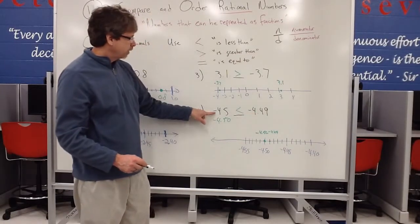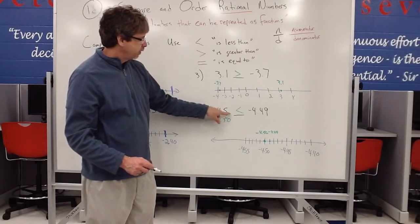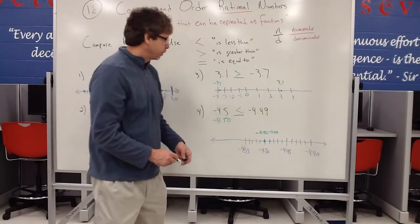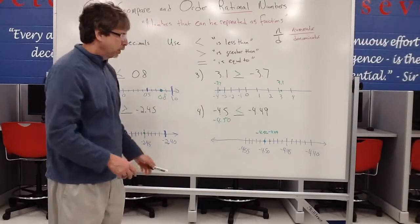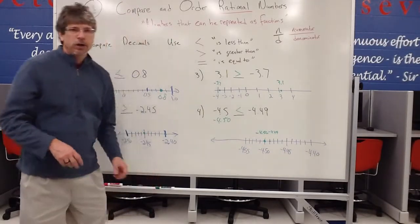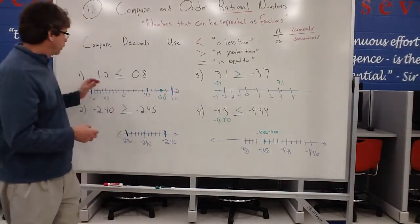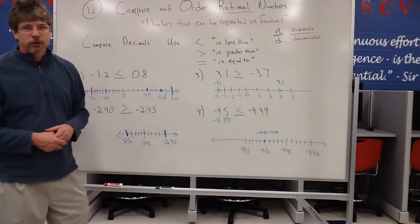Or in other words, negative 4 and 5 tenths is less than negative 4 and 49 hundredths. So again, a number line can be a really easy tool to compare decimal numbers. So take advantage of that.